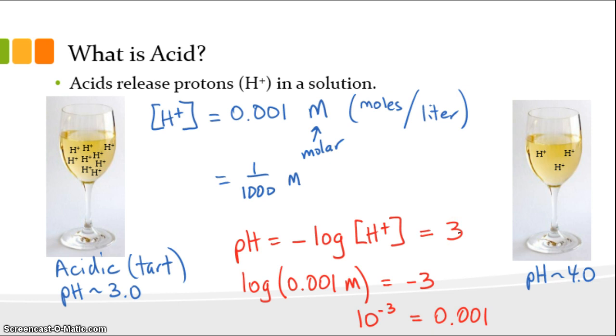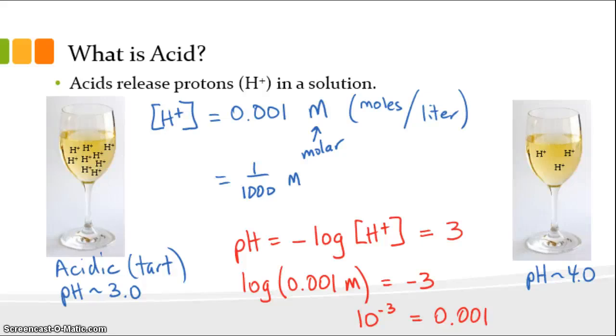We like that because even though we're dealing with small molar concentrations, we get to deal with positive numbers. When we're looking at the pH scale, pH can go negative, but generally with wine we're dealing with pHs between 3 and 4.